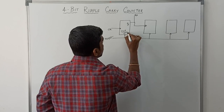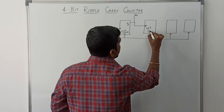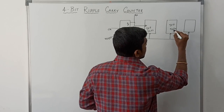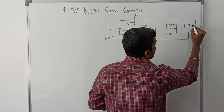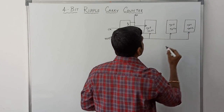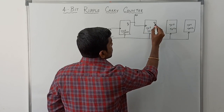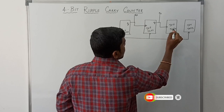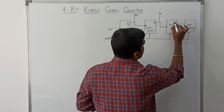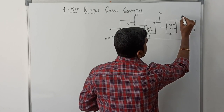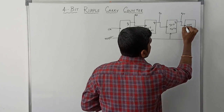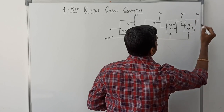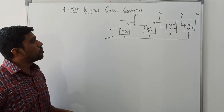TFF0 is the first T flip-flop, TFF1 is the second, TFF2 is the third, and the final one is TFF3. Here you can get the result Q1. This Q1 is given to the clock signal of TFF2. The output of TFF2 is Q2, which is given to the next flip-flop clock signal. The final flip-flop output is Q3. This is the simple structure of the 4-bit ripple carry counter.